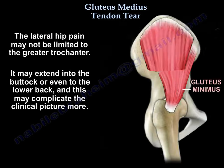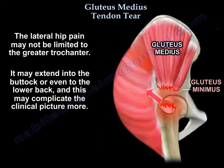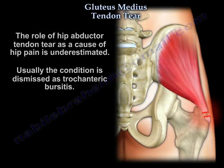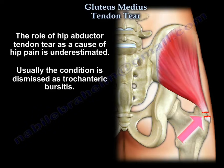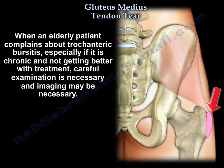The lateral hip pain may not be limited to the greater trochanter. It may extend into the buttock or even to the lower back, which may complicate the clinical picture. The role of hip abductor tendon tear as a cause of hip pain is underestimated and the condition is usually dismissed as trochanteric bursitis. When an elderly patient complains of chronic trochanteric bursitis not getting better with treatment, careful exam and imaging are necessary.